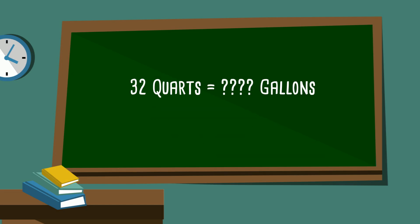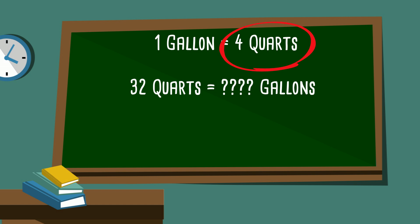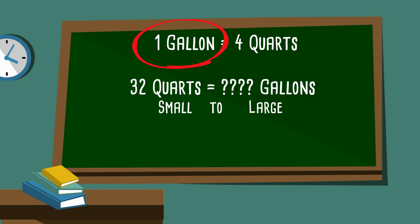In this example, 32 quarts equals how many gallons? The hint: one gallon equals four quarts. Quarts is smaller than gallons, so we're moving from small to large, so we will divide.